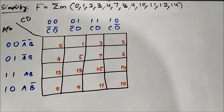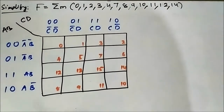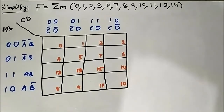This is the 8th question related to 4-variable SOP K-map simplification. We have this given boolean function in terms of the minterm values, and they are 0, 1, 2, 3, 4, 7, 8, 9, 10, 11, 12, and 14.